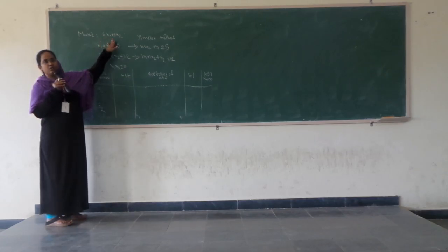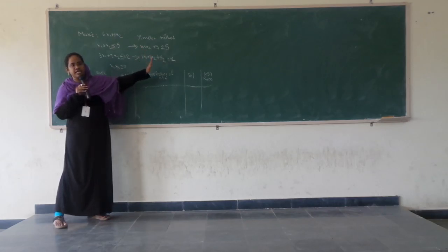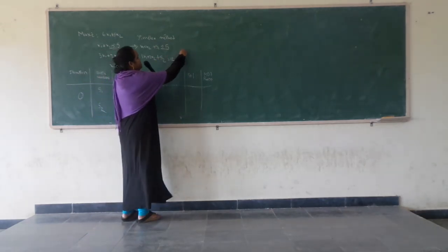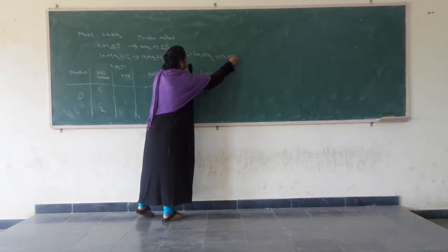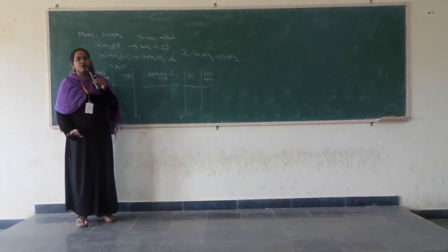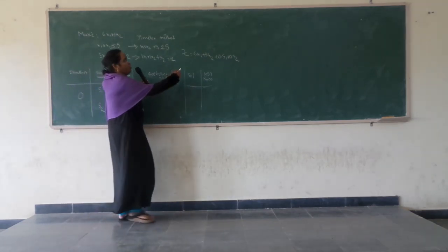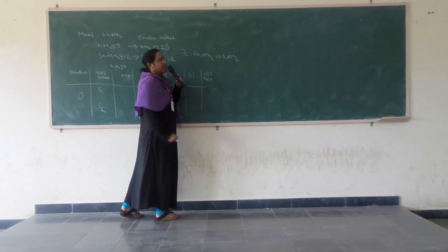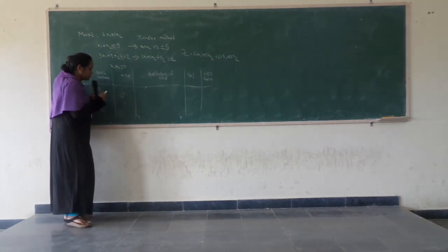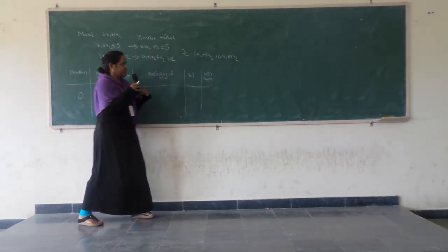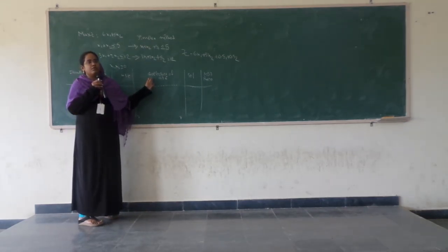Cost means the coefficient of the variable in the objective function. The objective function is maximize z equal to 6x1 plus 5x2 plus 0 times s1 plus 0 times s2. So the cost of the basic variable s1 is 0, and the cost of s2 is also 0.